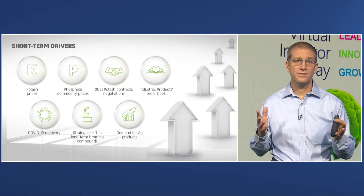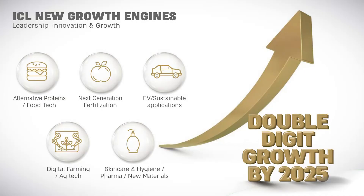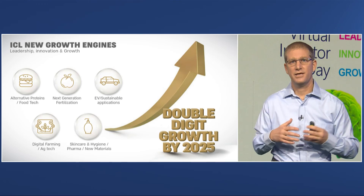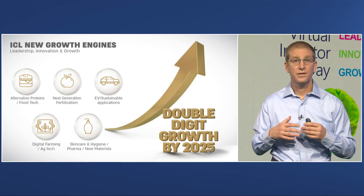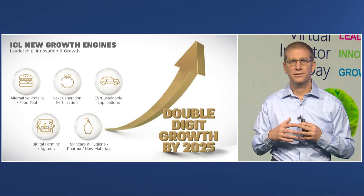You heard today the main five growth engines that will take us forward to 2025 and beyond. Rado talked about food and alternative proteins. Eli described our move toward next-generation fertilization. Anant discussed EV and sustainable applications in our bromine value chain. Steven shared the digital farming transformation. And Ananta talked about moves around new materials. All of this will take us to the second half of the decade with even stronger growth.